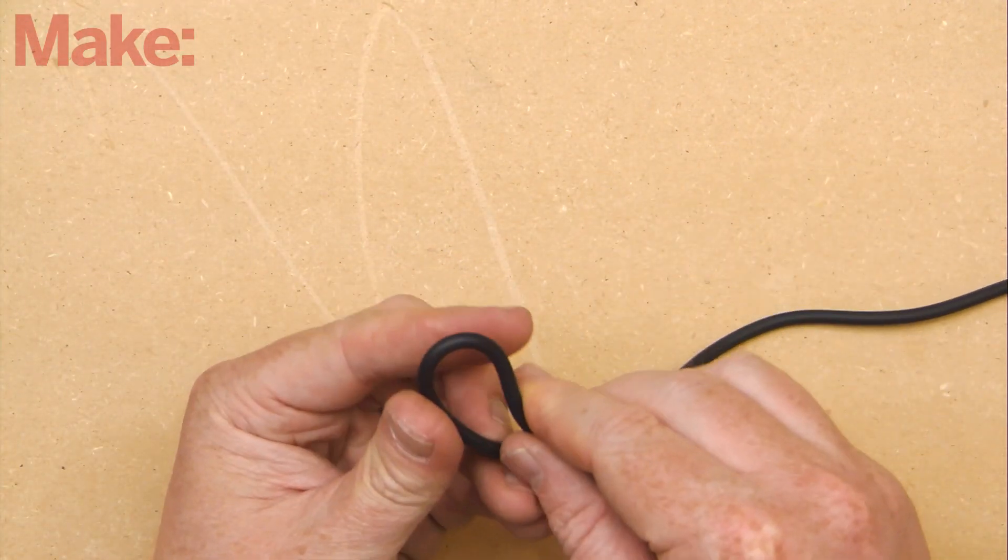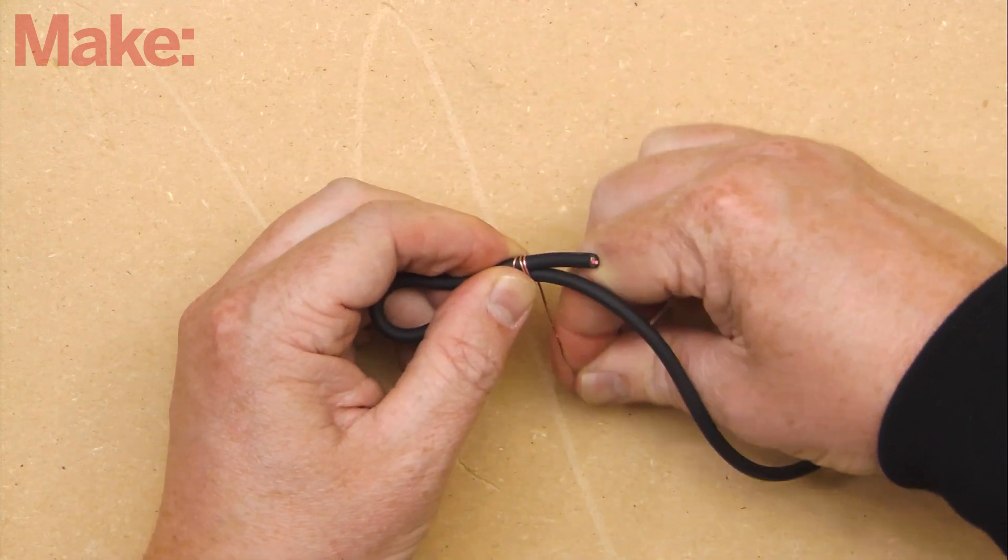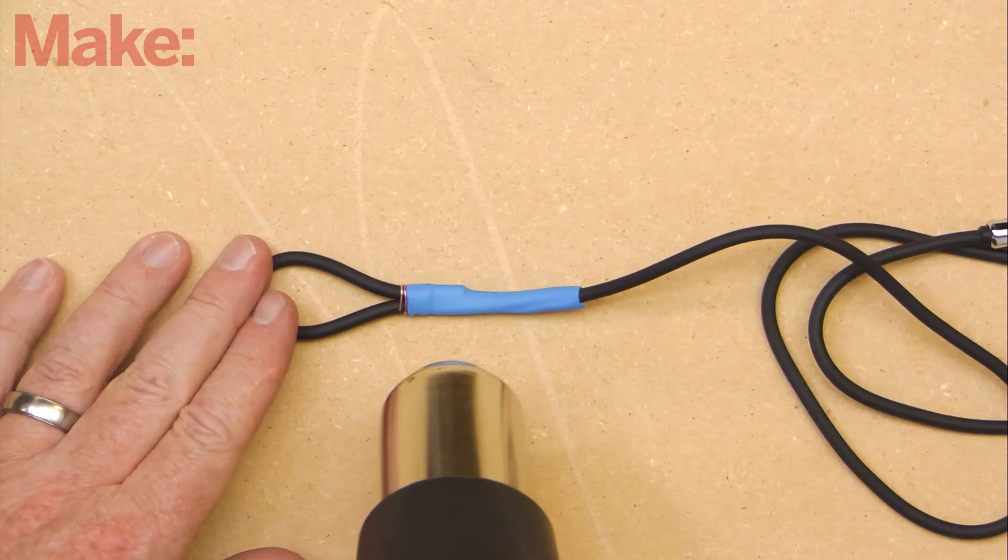Make a loop on the cut end of the long cable and secure it in place using a few inches of solid core wire with the insulation removed, and then further secure it with heat shrink tubing.